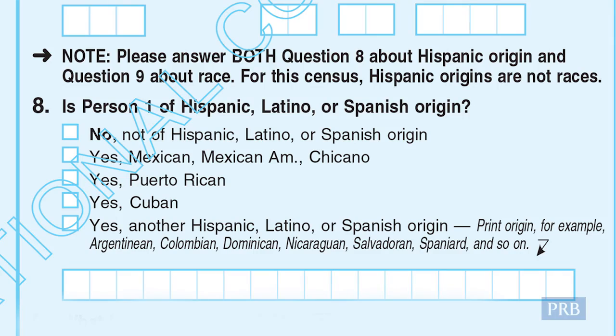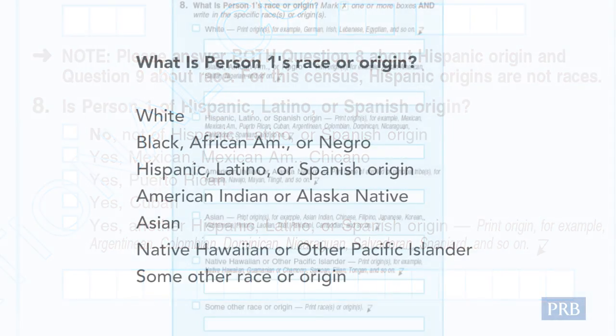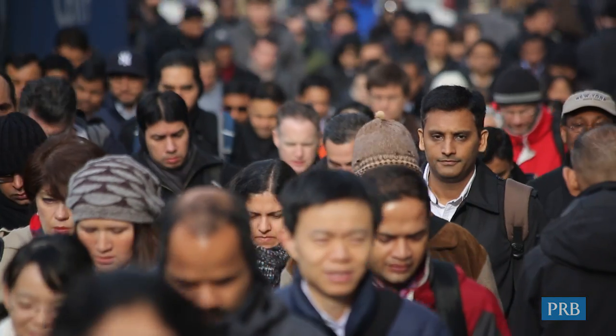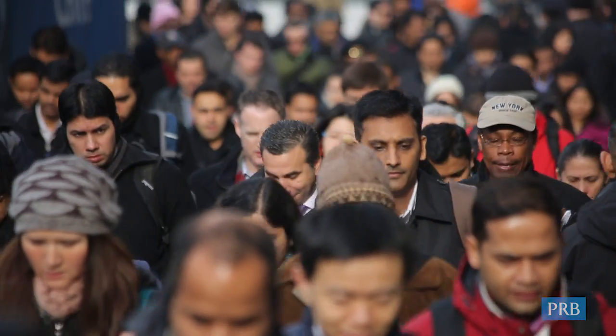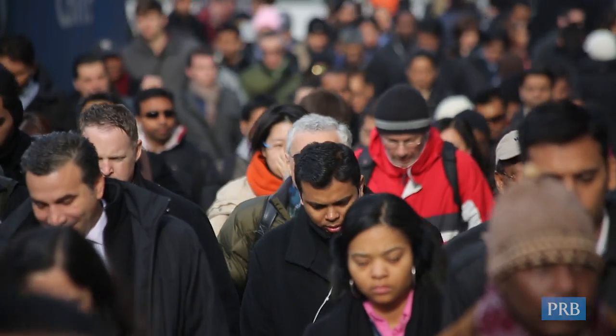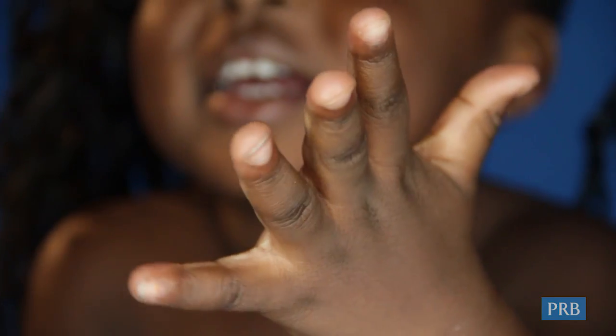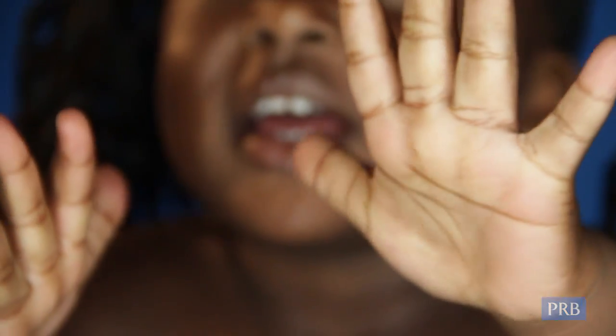What does the future hold for racial classification? In 2020, the question on Hispanic origin may be combined on the census form. Our ideas about race will be further blurred by trends in intermarriage between groups. The way we think about race is certain to evolve over time, and race as we know it today could lose its meaning.